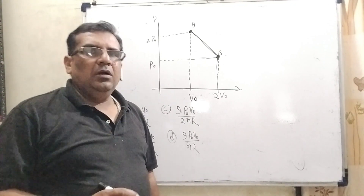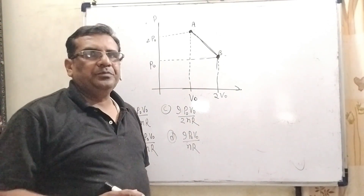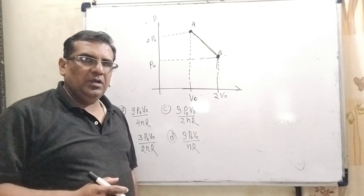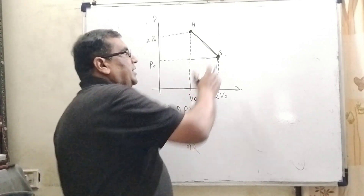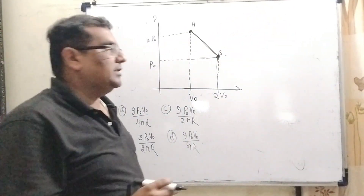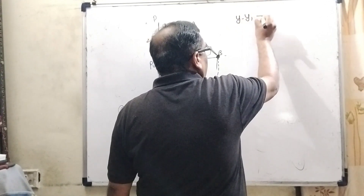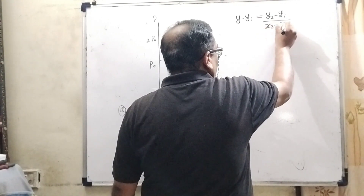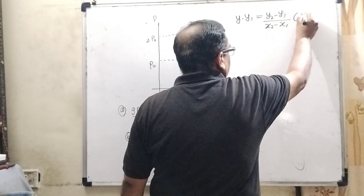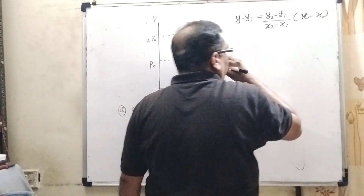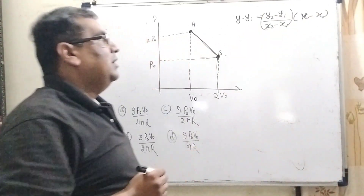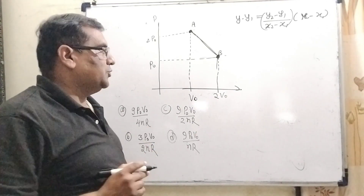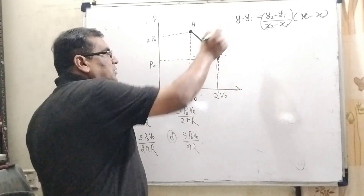This thermodynamics question is based on mathematics. Here two topics are covered: straight line and maxima-minima. The equation of a straight line passing through two points is: Y minus Y1 equals (Y2 minus Y1) upon (X2 minus X1), multiplied by (X minus X1). This slope is denoted by M.